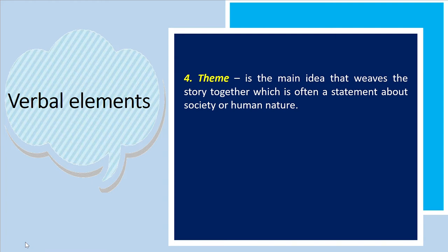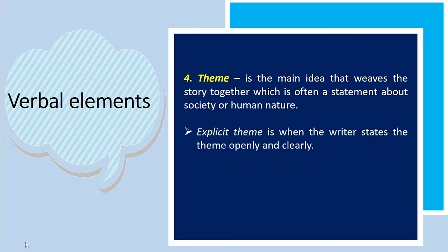The next verbal element is theme. Theme is the main idea or underlying idea that weaves the story together, often a statement about society or human nature. There are two types: primary or explicit themes, where the writer states the theme openly and clearly. These are common in children's literature, as children think literally and need themes to be clearly revealed.